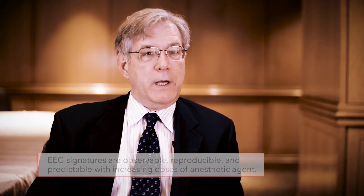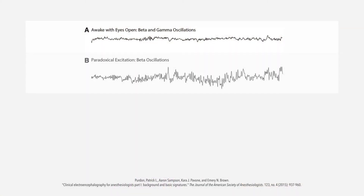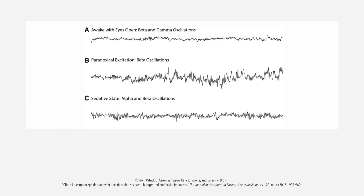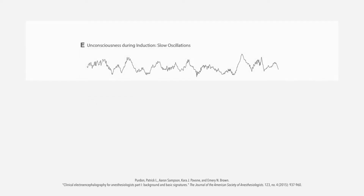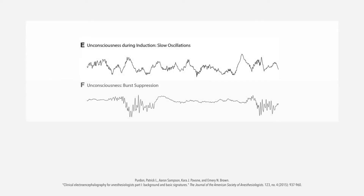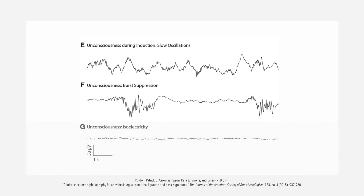The EEG is also associated with surgical conditions. So you can look at the EEG and understand that a patient is ready for a general anesthetic or is in a plane of sedation, so that there's a connection between what you're seeing with your EEG and what your patient is demonstrating clinically.